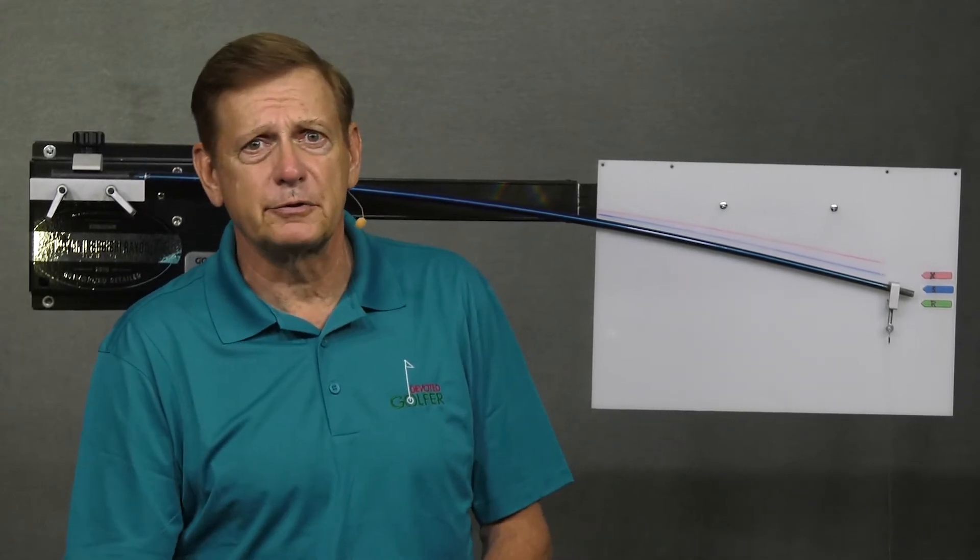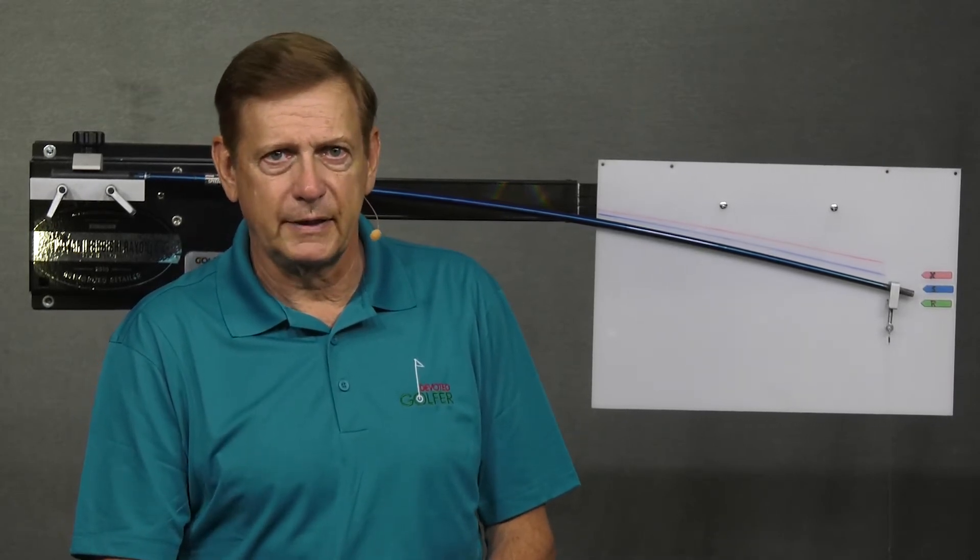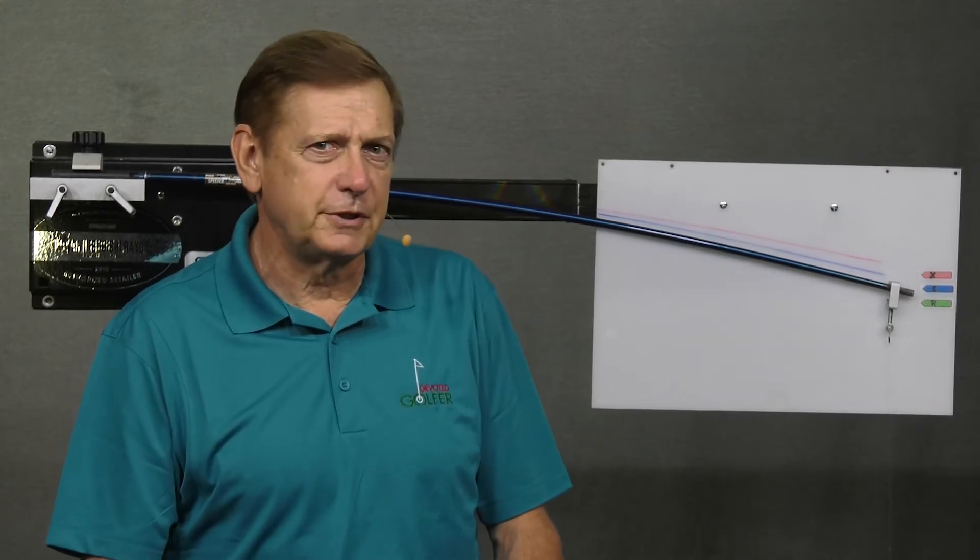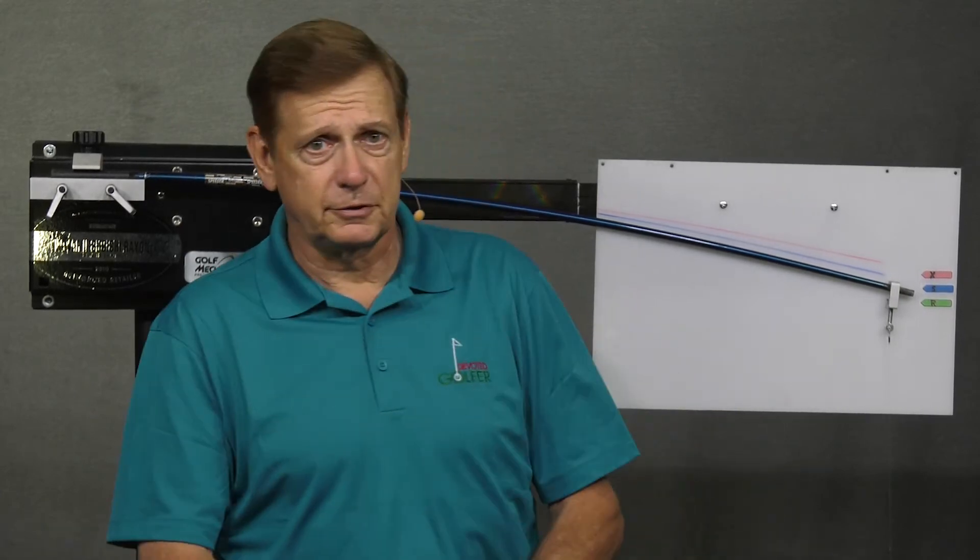But actually, a few years ago, advances in cameras made it possible to image the shaft while deflecting it and analyze the image. But that image is not much different than the deflection board used by Hogan's club maker many years ago.